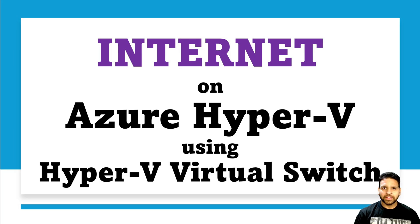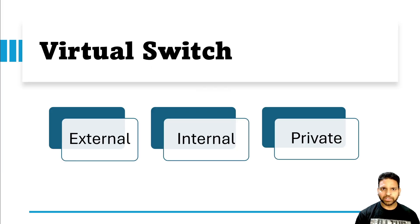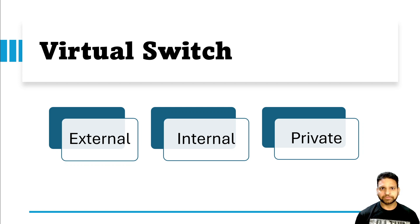Hello everyone. In the case of Hyper-V, the network connectivity is maintained by a virtual switch. A virtual switch is a bridging network that provides connectivity from a virtual machine to another virtual machine, to the host operating system where Hyper-V is installed, as well as the outside network. In Hyper-V, there are three different types of virtual switches which can be created: external, internal, and private.